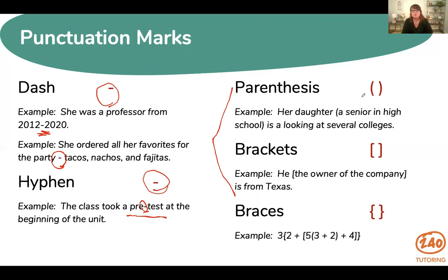Now parentheses, brackets, and braces are grouped together because they're so similar. Parentheses are used to set off parenthetical expressions or additional information, and can sometimes take the place of commas. Example: her daughter (a senior in high school) is looking at several colleges. Brackets are used for clarifying information that could be removed from the sentence — for example: he [the owner of the company] is from Texas. Braces look a little different with a small point at the end; they aren't used frequently in writing but are more commonly used in mathematical expressions, as seen in this example which actually contains all three.